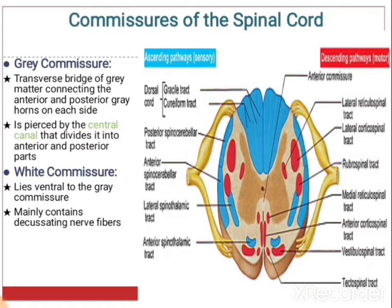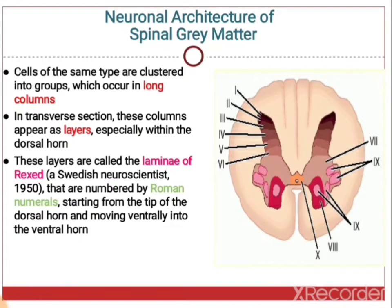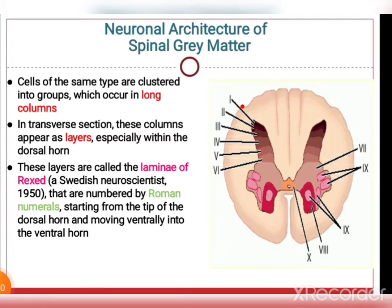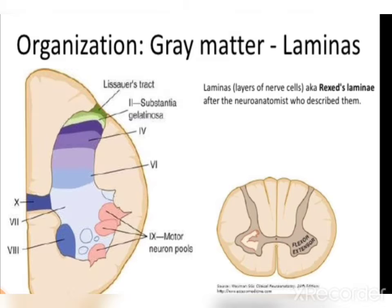The commissures: the grey commissure is a transverse bridge of grey matter connecting the anterior and posterior grey horns. The white commissure lies ventral to the grey commissure and contains decussating nerve fibres. Cells of the same type are clustered into groups occurring in long columns; in transverse section these columns appear as layers, especially within the dorsal horn. These layers are known as laminae of Rexed, numbered by Roman numerals starting from the tip of the dorsal horn.